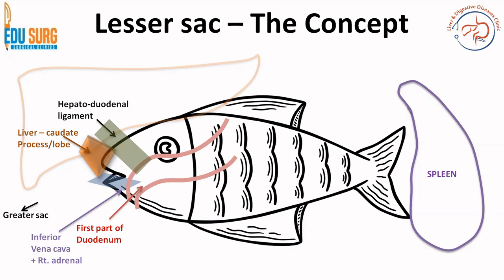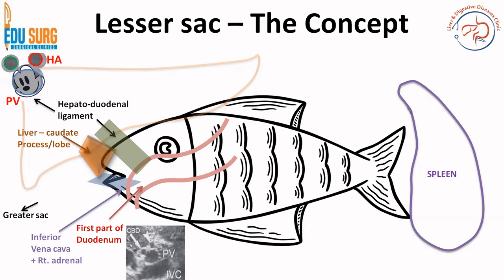The hepatoduodenal ligament basically contains the Mickey Mouse configuration. This Mickey Mouse configuration is an ultrasound image showing the orientation of the hepatic artery, the bile duct in green, and the portal vein in blue within the hepatoduodenal ligament. The bile duct is to the right, hepatic artery to the left, and portal vein is posterior. This is the normal configuration seen in most cases and is a very commonly asked question.